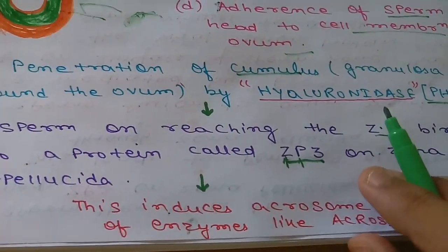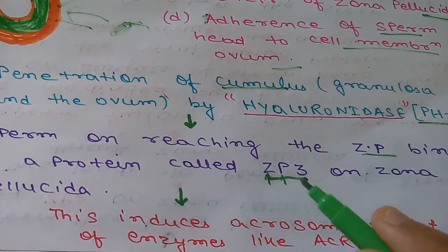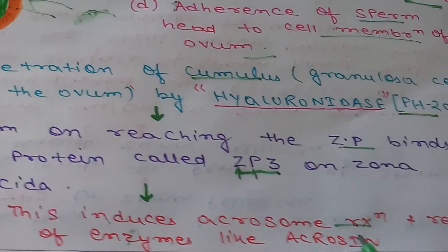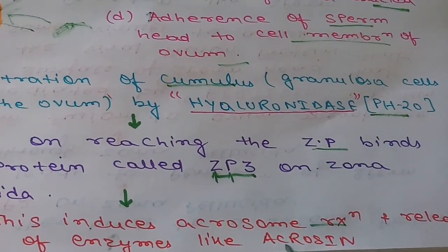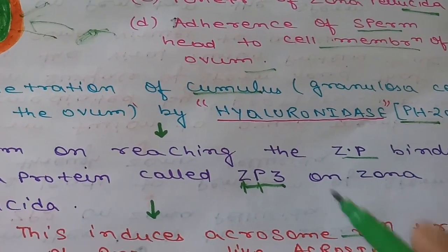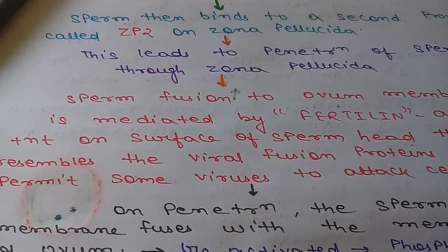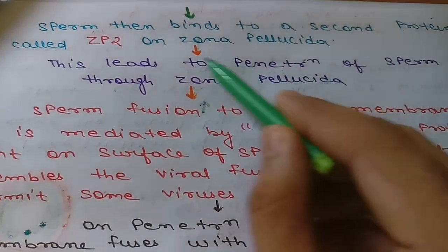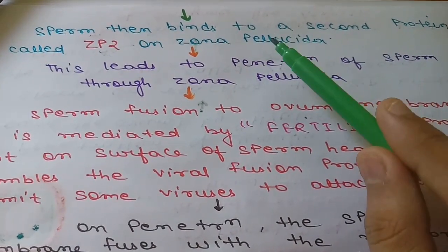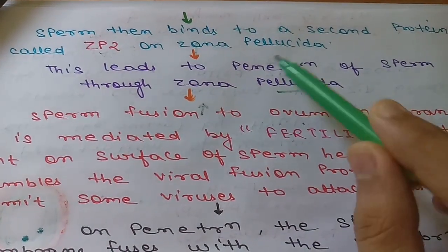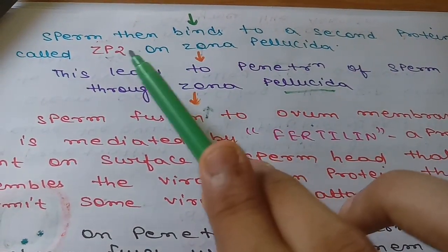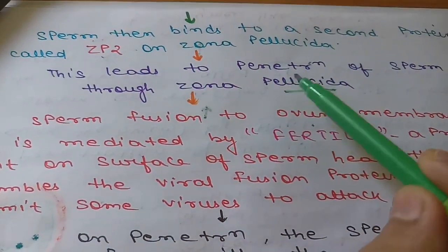The sperm binds to the ZP3 receptors present on the zona pellucida, and on binding to ZP3 it induces the acrosomal reaction — that is, the release of enzymes like acrosin present in the acrosome of the sperm. After this, the sperm then binds to a second protein known as ZP2, also present on the zona pellucida, and this leads to penetration of the sperm through zona pellucida.